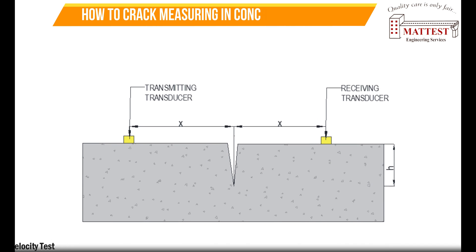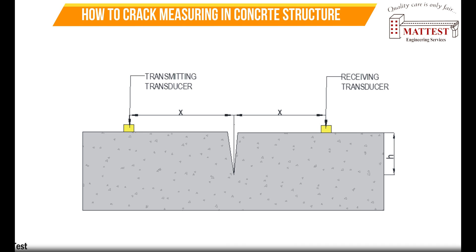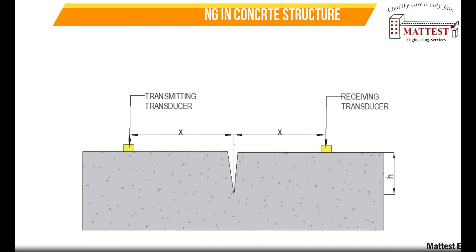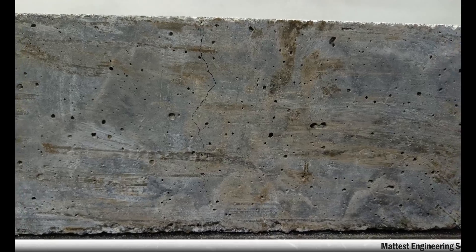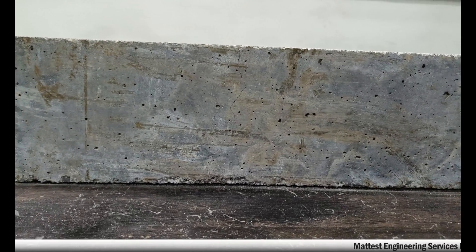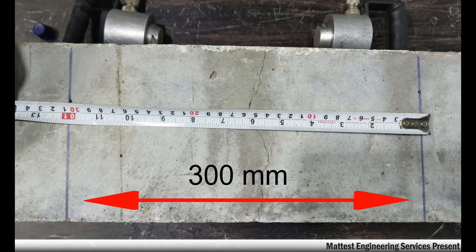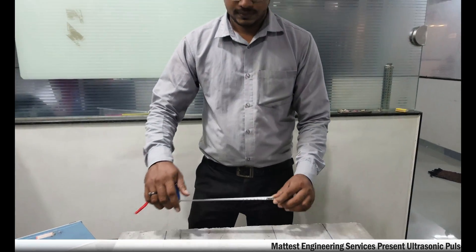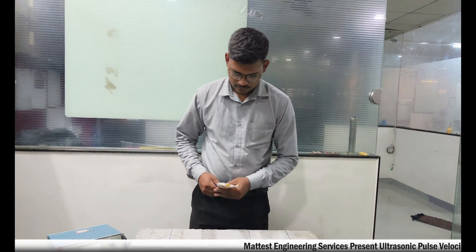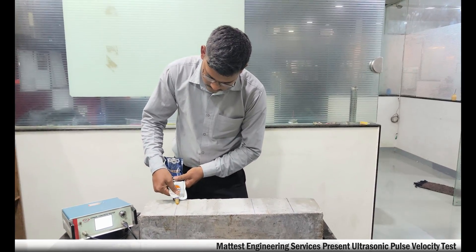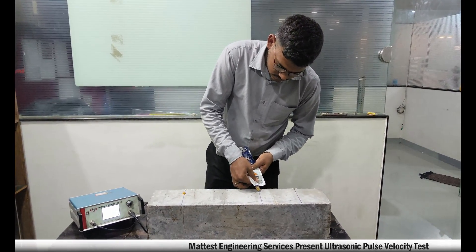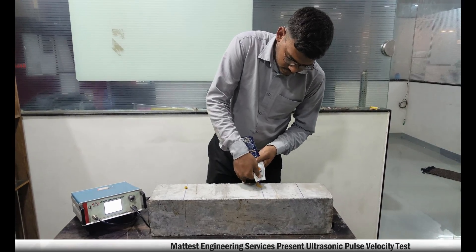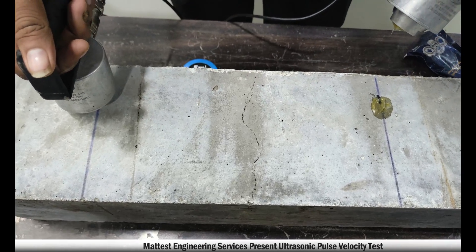How to measure crack depth in concrete structure: this diagram illustrates the standard positioning of the transmitting transducer and receiving transducer, where H represents the depth of the crack. Take a sample of concrete structure which has a crack, then mark on concrete structure 150 millimeters from LHS as well as RHS. Apply gel on the concrete structure.